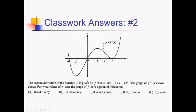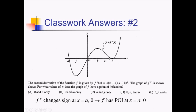On this graph, we're given f double prime of some function. We want to know where the original function has a point of inflection. That's going to happen wherever f double prime is changing sign. The only place that happens: f double prime changes sign at 0 and A, and that's it. Therefore, f has points of inflection at A and 0. We bounce on B, but that's not good enough, so we're going to choose answer choice A.